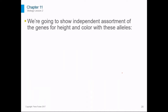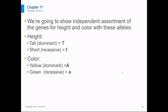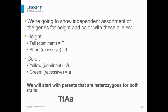We're going to show independent assortment for genes with height and color. Height will have a capital T for tall, which is the dominant trait, and a lowercase t for short, which is the recessive trait. Color will have a capital A for yellow, which is the dominant trait, and a lowercase a for green, which is the recessive trait. We will start an example where both parents are heterozygous for both traits. The mom plant will have both a tall allele and a short allele — so it's heterozygous — and it's also going to have both a yellow allele and a green allele, so it's heterozygous for both height and color. The dad plant will have the exact same setup.